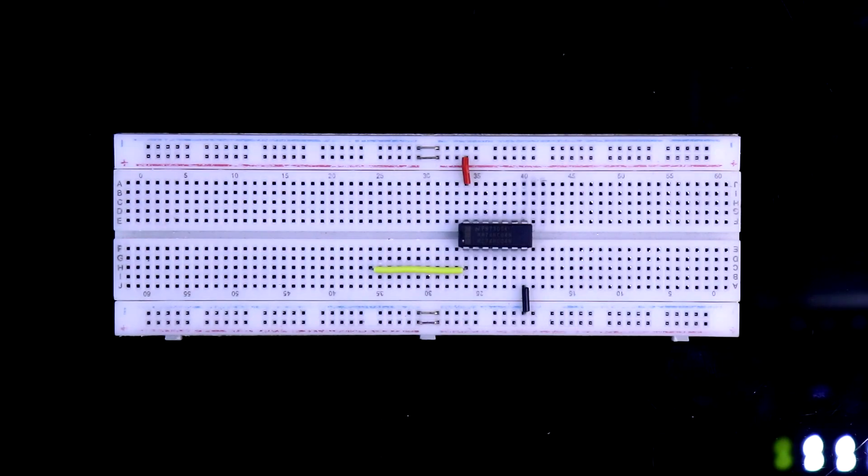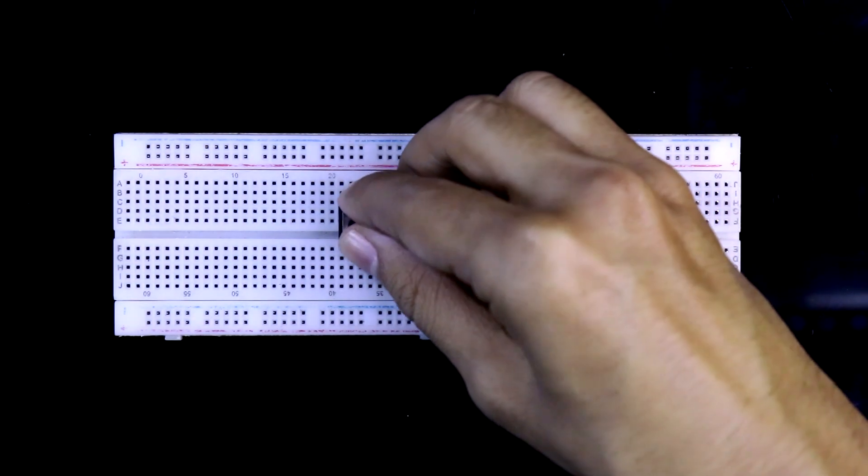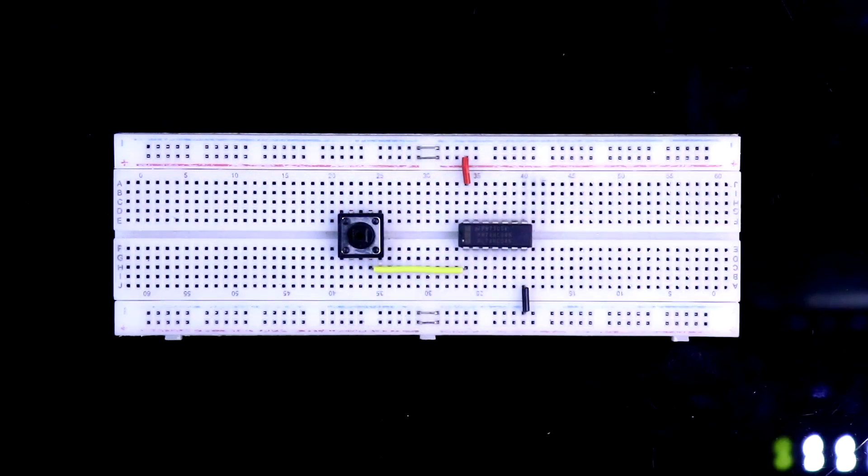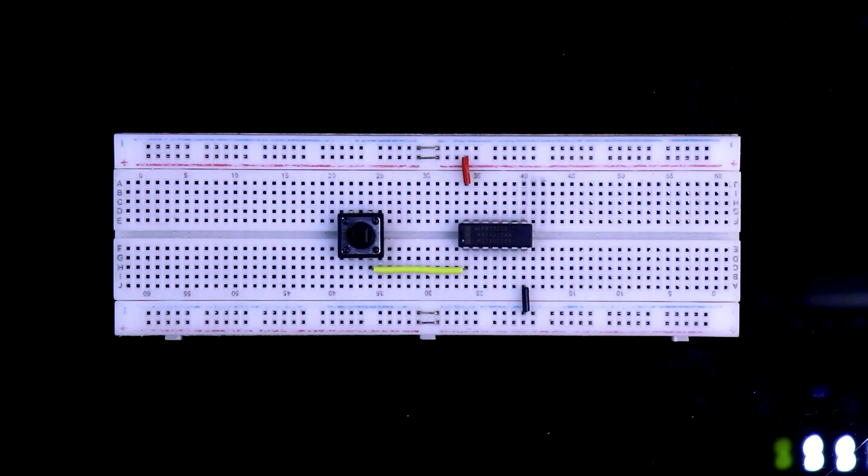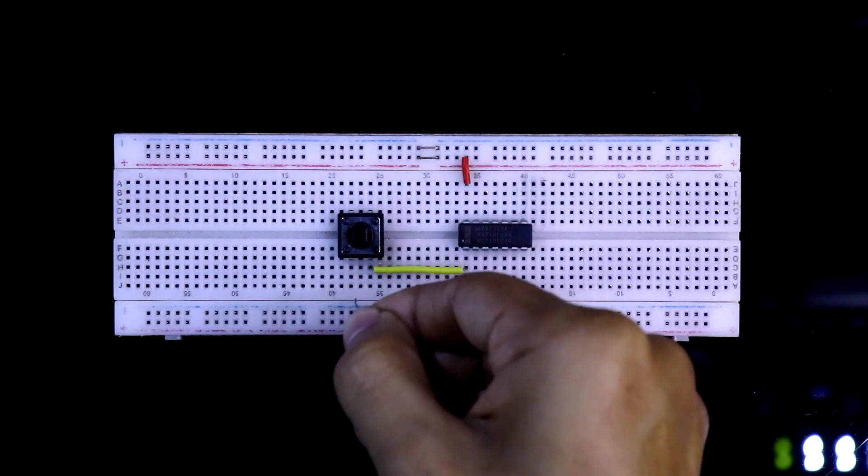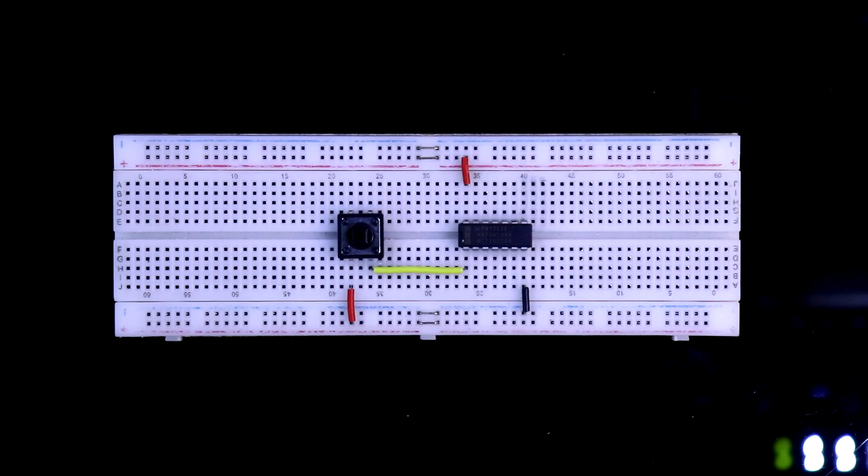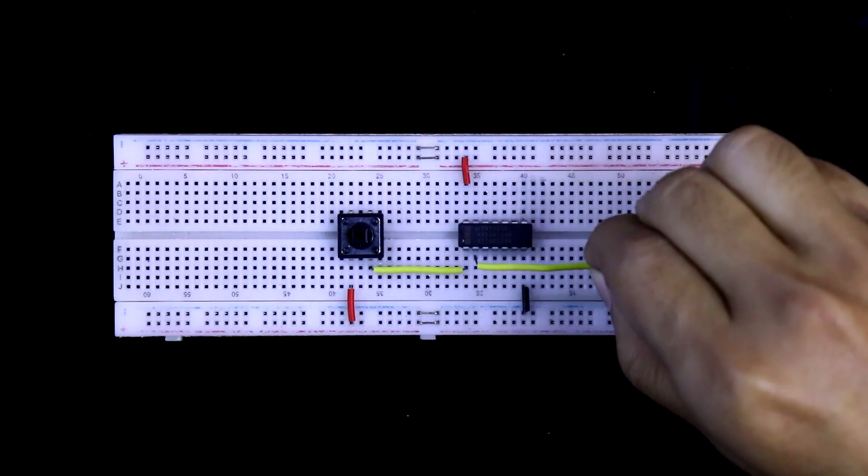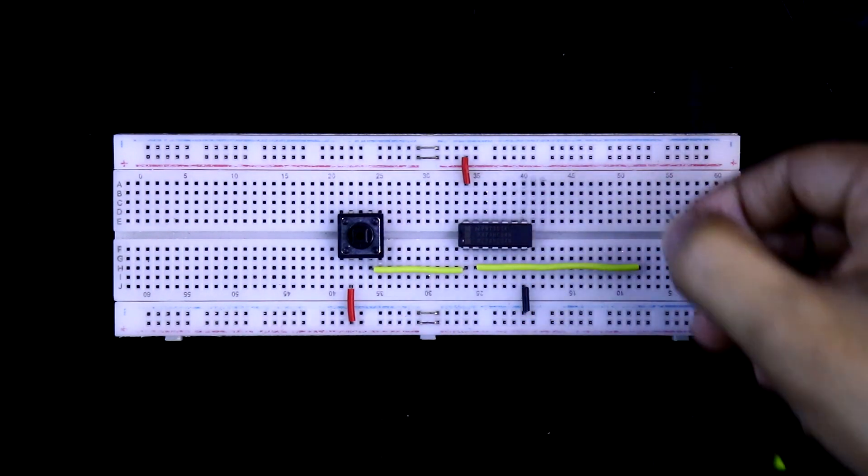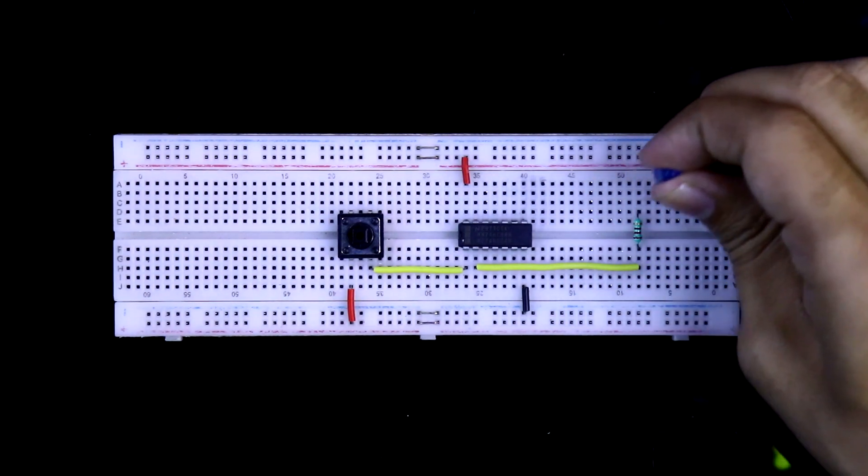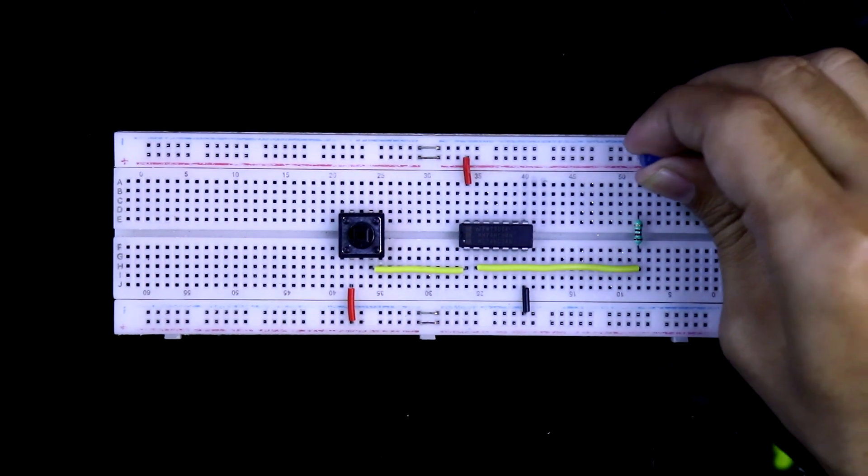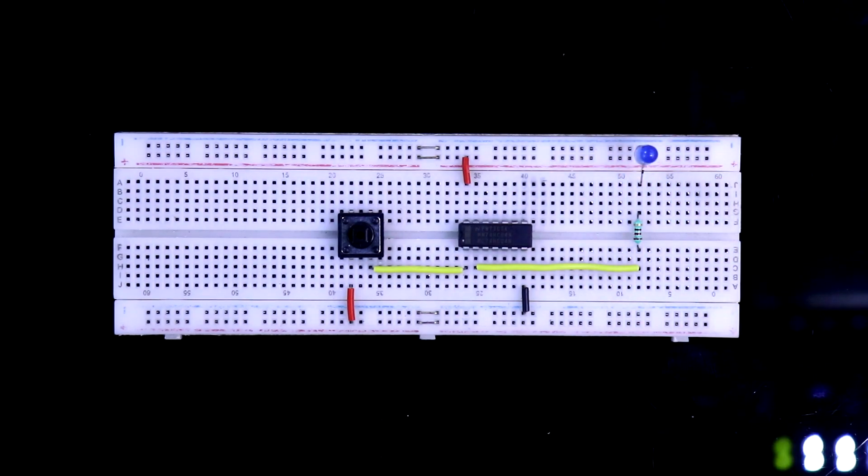Pin number 1 is input, and with the input pin I have connected this push button switch. The other pin is connected to plus 5V. Pin number 2 is output. 220 ohms resistor is connected. The positive pin is connected with the resistor and the negative is connected with the ground rail.